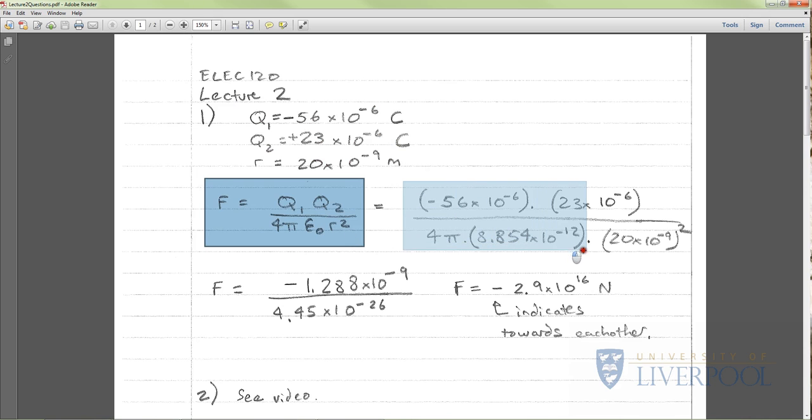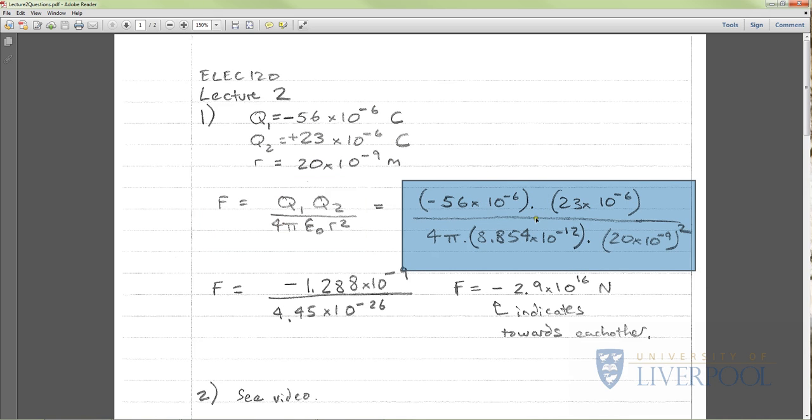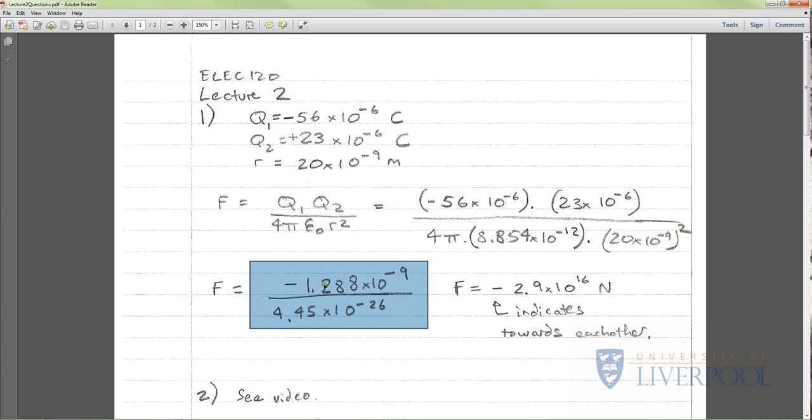We just use Coulomb's law. Here's my q1, here's my q2. I've got 4π times epsilon naught, which is the permittivity of free space, so it's 8.854 times 10 to the minus 12, and that's multiplied by r squared, which is 20 times 10 to the minus 9 squared. You should get a negative number times 10 to the minus 9 over a very small number, times 10 to the minus 26.